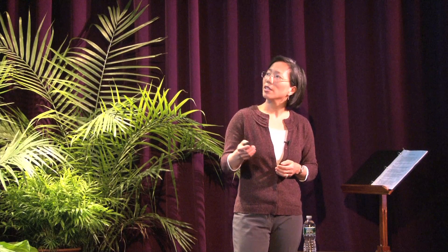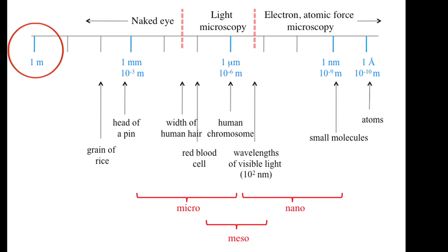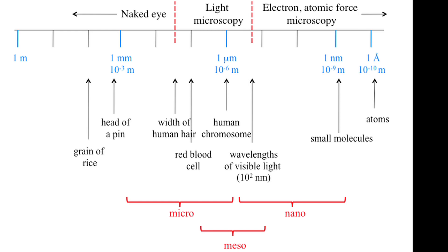To talk a little bit about the length scale that I'm interested in, here's a scale bar just to give us a frame of reference. Here's a meter. A thousand times smaller than that is a millimeter. A thousand times smaller than that is a micron. A thousand times smaller than that is a nanometer — so now we're down to a billionth of a meter. Ten times smaller than that is an angstrom, and chemists like to talk about angstroms because that's about the size of an atom. The world of things we're talking about tonight are in the nanoscale.